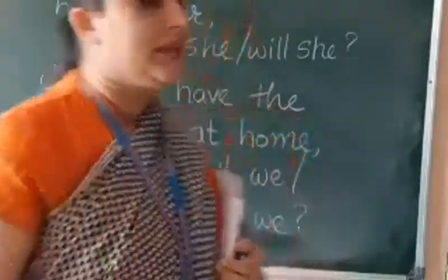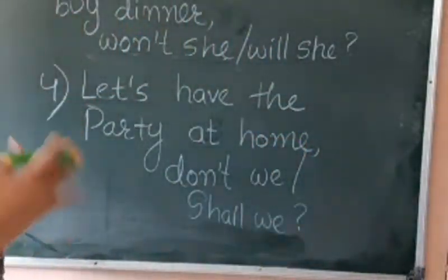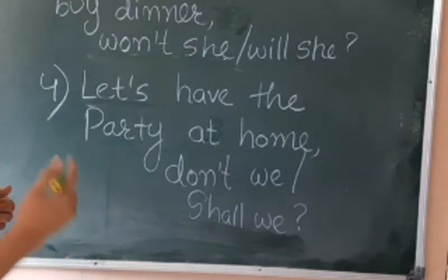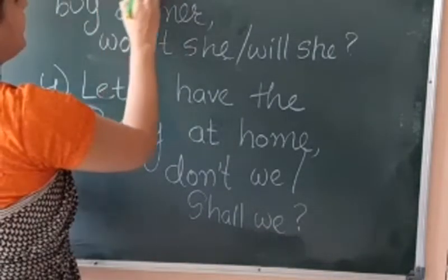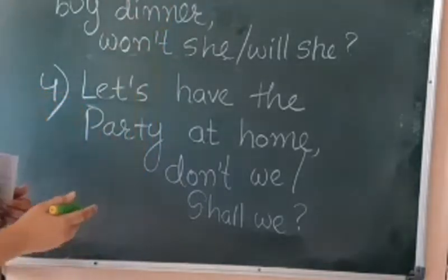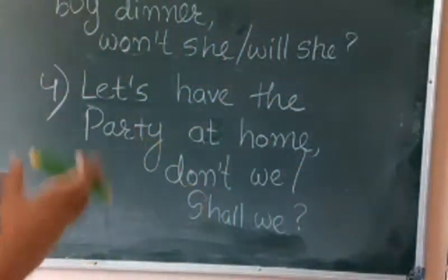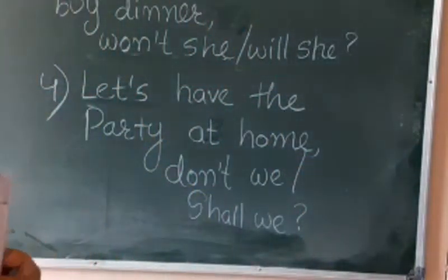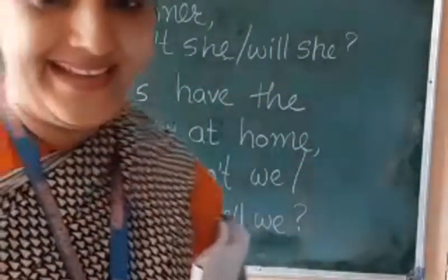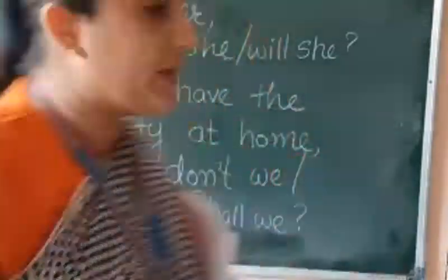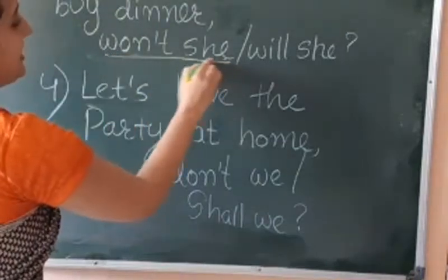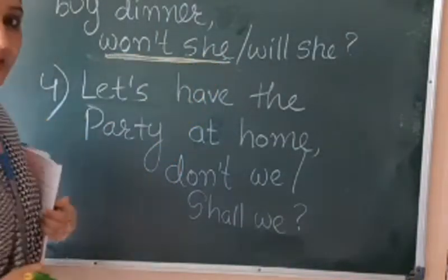Now the third one: 'She will have to buy dinner.' The helping verb is already given — that is 'will.' The sentence is positive, so the question tag will be negative. 'Will' will change into 'won't.' So the answer is: won't she?